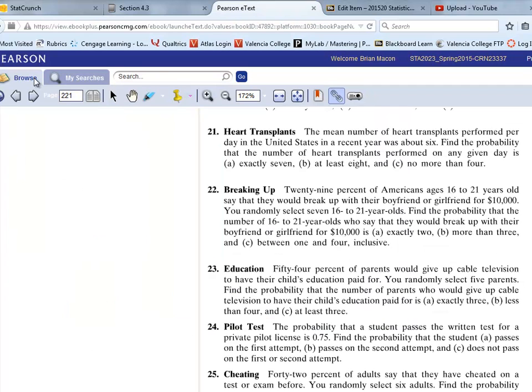Now, if we go back to the textbook here, letter B says that we have at least 8. So you think about at least 8 means we have 8 or more. We want the probability of 8, and 9, and 10.